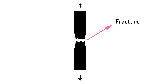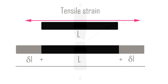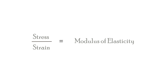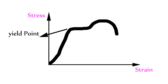We start the tensile test and observe cross-section reduction. We look at strain and the elastic limit. In this test, we plot the stress-strain curve. In the curve, there is an elastic point, and that point is the yield strength.